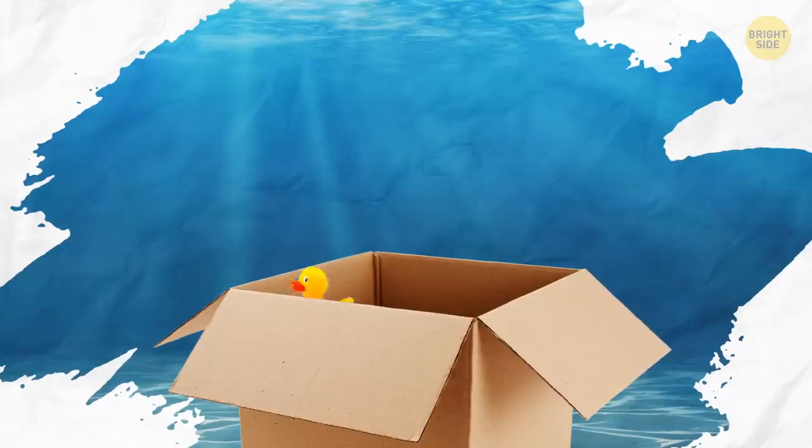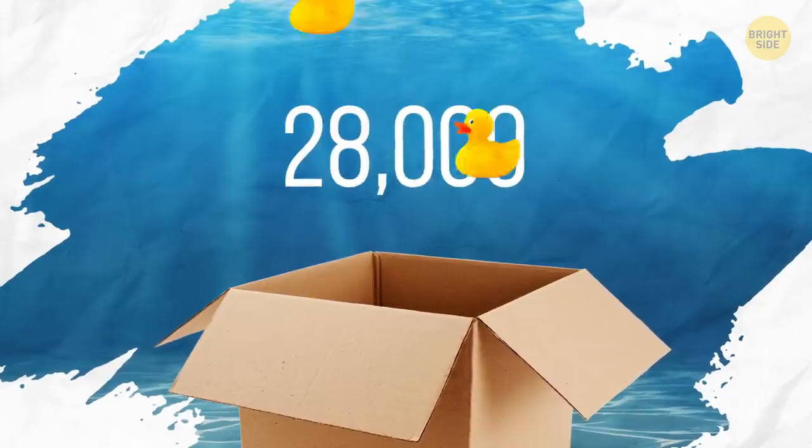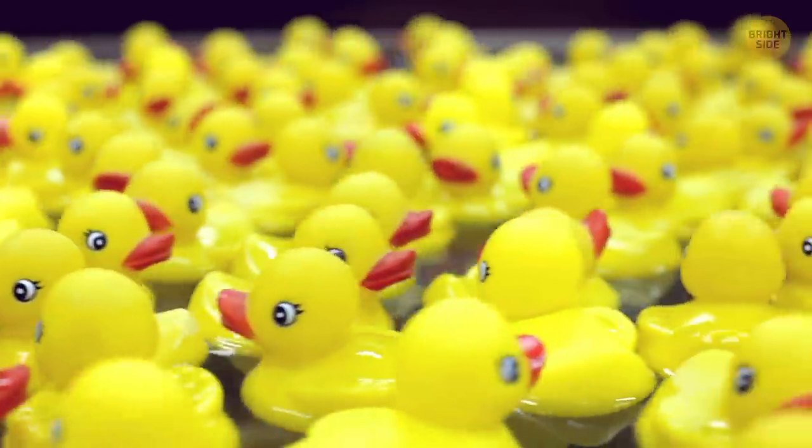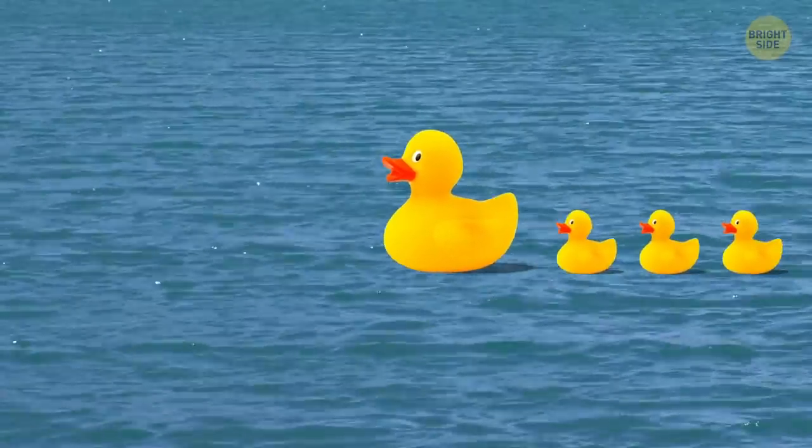In 1992, a cargo ship lost a crate with more than 28,000 rubber duckies in the North Pacific. These toys still appear on coasts around the world, even over in the Atlantic.